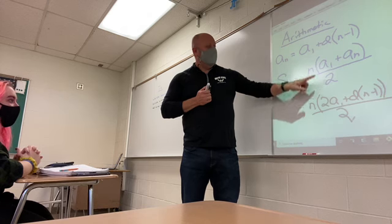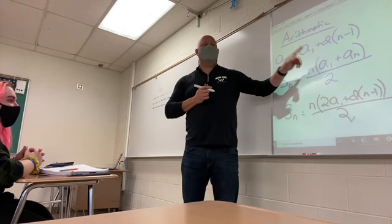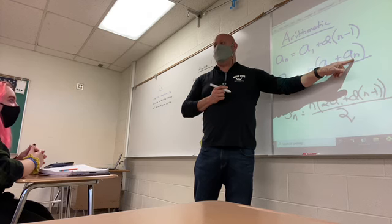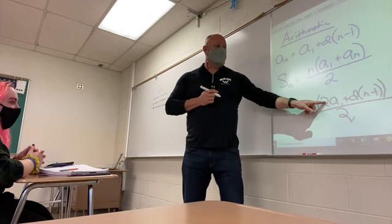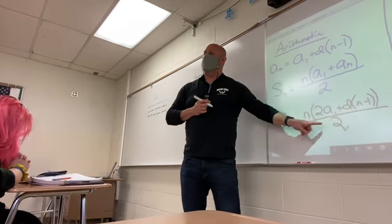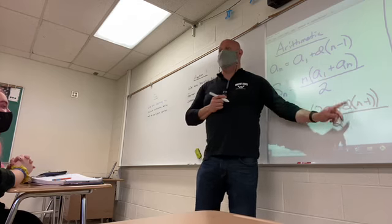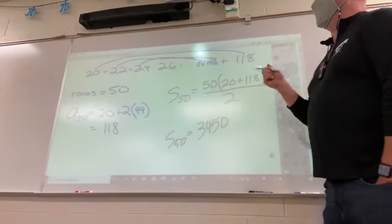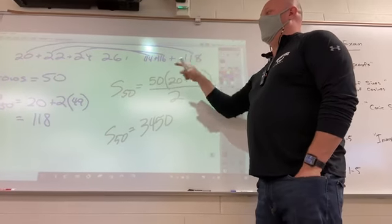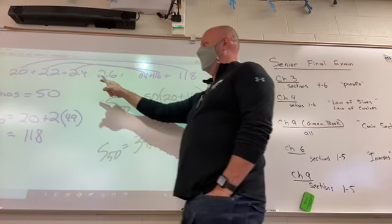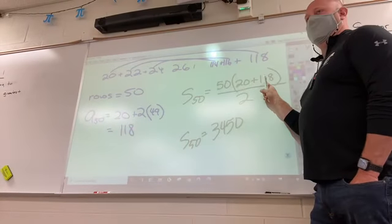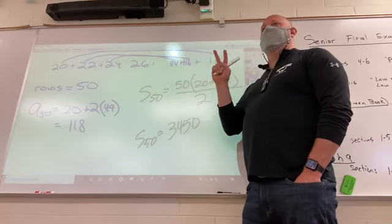But again, what's the difference? This one, you have to know the number of terms, the first term and the last term. I don't need to know the last term here, do I? I need to know the d value instead, right? That same problem that I just did, we did it in two steps, didn't we? Because we had to first find the last term, then we plug that into the other formula, and we did it in two steps.